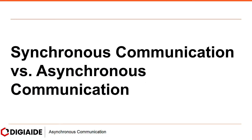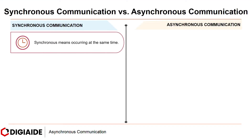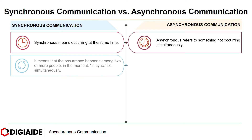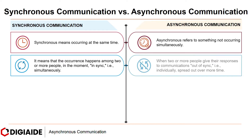And finally, let's look at the differentiation between synchronous communication and asynchronous communication. Synchronous means occurring at the same time, whereas asynchronous refers to something not occurring simultaneously. In the case of synchronous, it means that the occurrence happens among two or more people in the moment — i.e., in sync, simultaneously. But on the other hand, when two or more people give their responses out of sync — i.e., individually — spread out over more time.